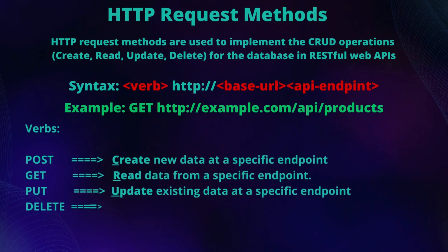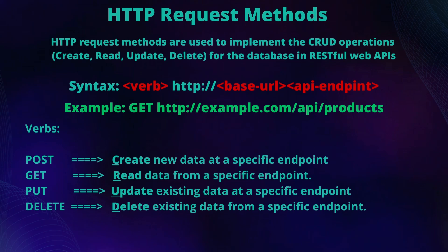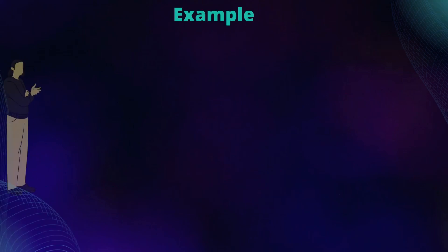Back to the verbs of HTTP request methods — the verb determines whether the database should create, read, update, or delete data. There are mainly four verbs with RESTful API endpoints: POST to create new data in the database, GET to read data from the database, PUT to update data in the database, and DELETE to delete data from the database.